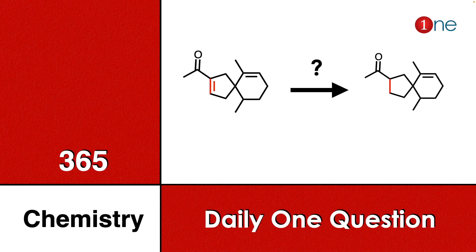Welcome to One Chemistry. This is the 365 Chemistry series — one daily question for you. Here, a five-membered alkene and a six-membered alkene are bonded together with a side chain carbonyl group. The product is the same, but only the conjugated double bond is reduced. You have to find the proper reagent to convert the reactant into the product.